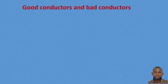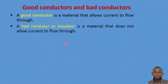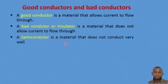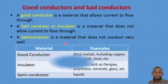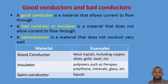Finally, we are going to talk about good conductors and bad conductors. A good conductor is a material that allows current to flow through. A bad conductor or insulator is a material that does not allow current to flow through. We also have semiconductors — a semiconductor is a material that does not conduct very well. Examples of good conductors include most metals such as copper, silver, gold, and steel, which means they can allow electric current to flow through easily.